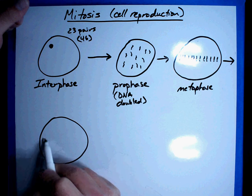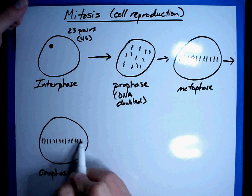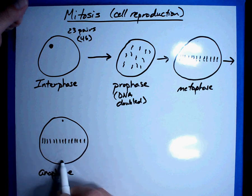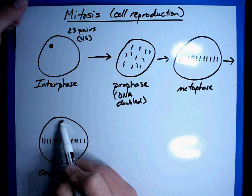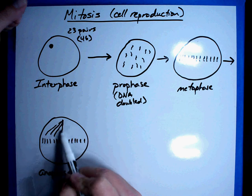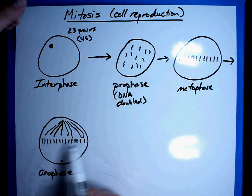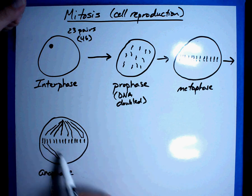Anaphase. Well, the DNA is lined up in the middle. And what has happened is there are these little things in the corners in the opposite poles of each other called centrioles. And then these little spiderweb looking things called spindle fibers start to attach to the DNA.